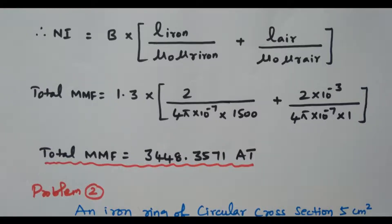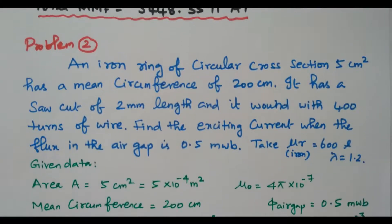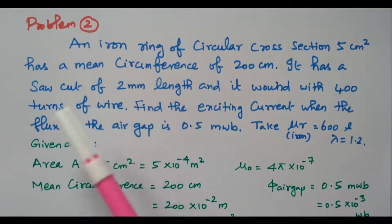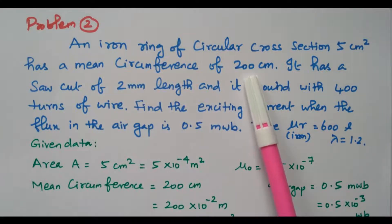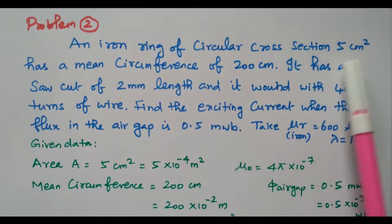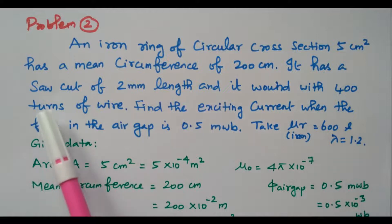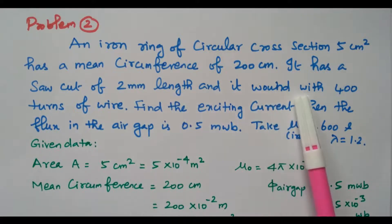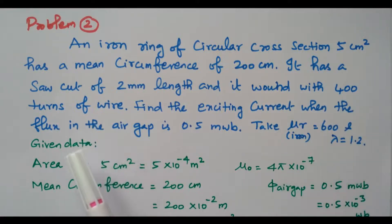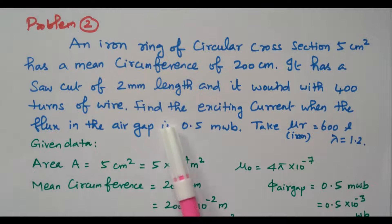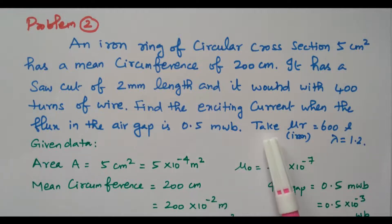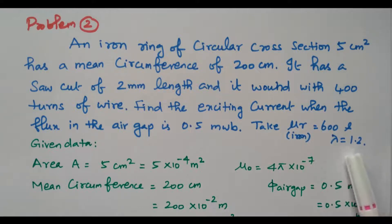Now we will go to the second problem. An iron ring of circular cross section 5 centimeter square has a mean circumference of 200 centimeter. It has a short cut of 2 millimeter air gap length and is wound with 400 turns of wire. Find the exciting current when the flux in the air gap is 0.5 milliweber. Take μr for iron as 600 and the leakage flux coefficient λ equal to 1.2.